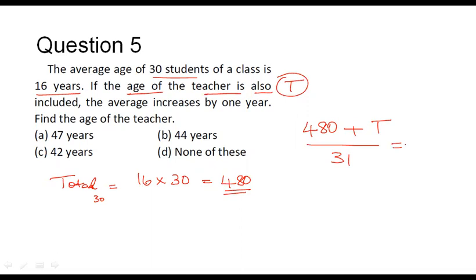The new average age of all these 31 people - it is given that by including the age of the teacher, the average increases by one year. What was the original average? 16. That increases by one year means the new average corresponds to 16 plus 1, that is equal to 17.